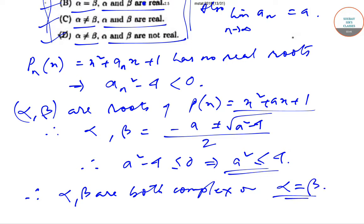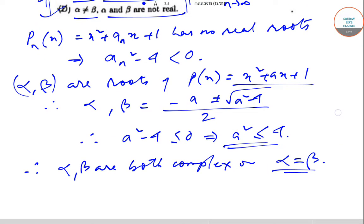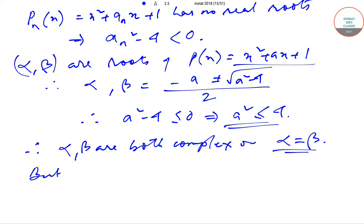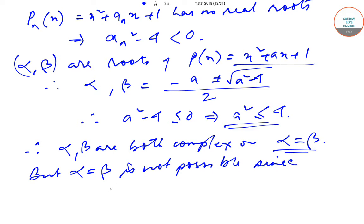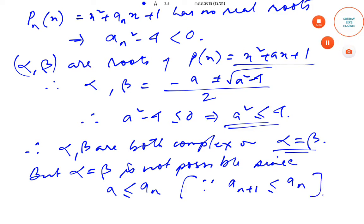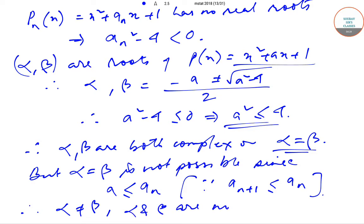Alpha equal to beta is not possible, since a is strictly less than a_n — this follows from the condition that a_{n+1} is always less than or equal to a_n. Therefore we can conclude that alpha is not equal to beta and alpha and beta are not real, which corresponds to option D.